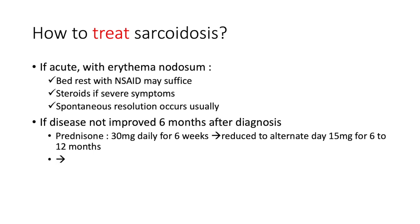How do you treat sarcoidosis? If it's acute with erythema nodosum, bed rest with NSAIDs may suffice. Use steroids if the patient has severe symptoms, especially dyspnea. Spontaneous resolution usually occurs, but if the disease has not improved six months post-diagnosis, consider starting prednisone.